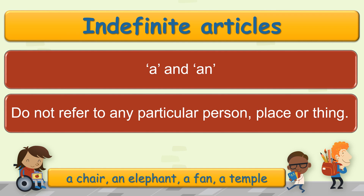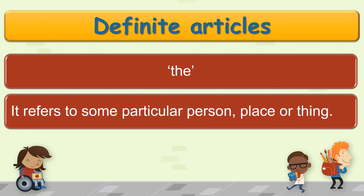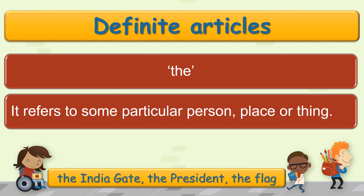Here, 'a' or 'an' is used before any chair, elephant, fan, and temple — not any particular one. The is called a definite article because it refers to some particular person, place, or thing. Like: the India Gate, the President, and the flag. Here, 'the' is used because they refer to a particular president, place, and thing.